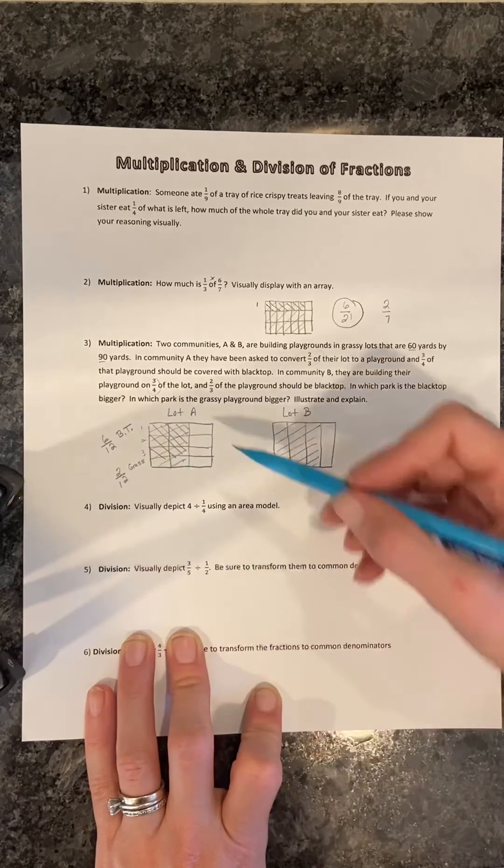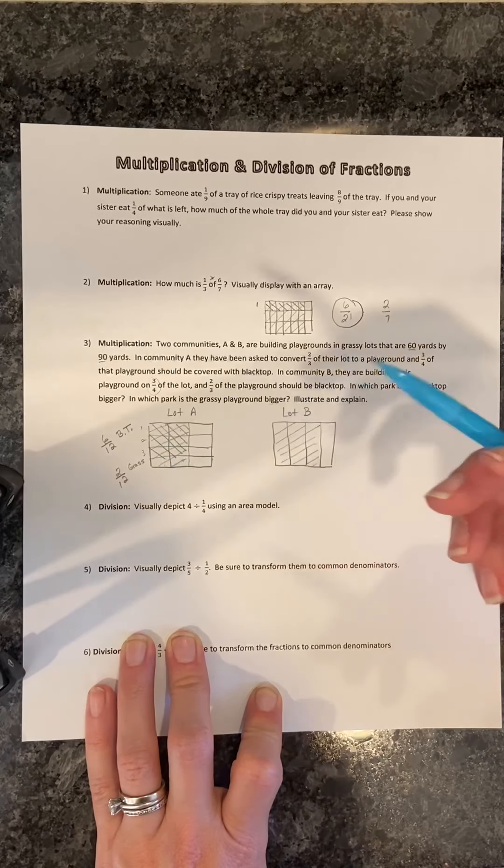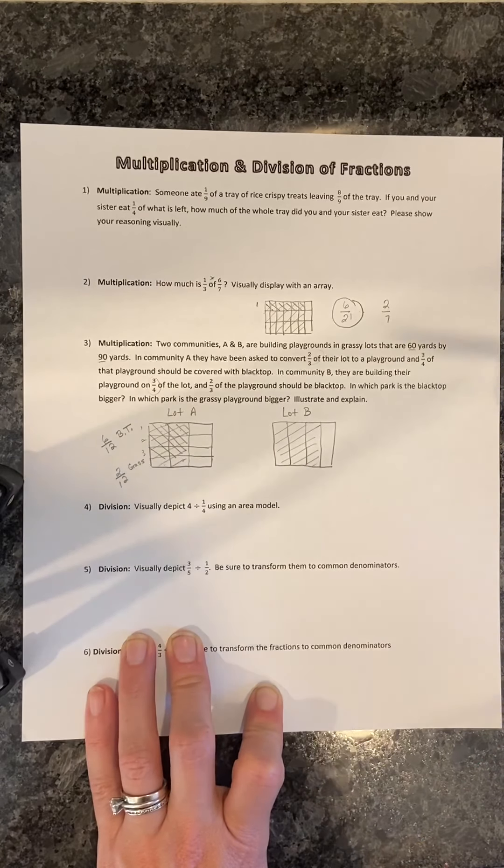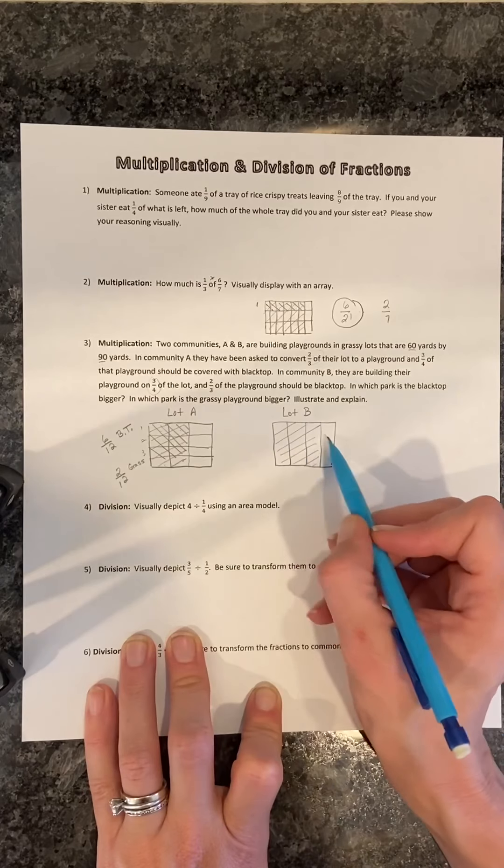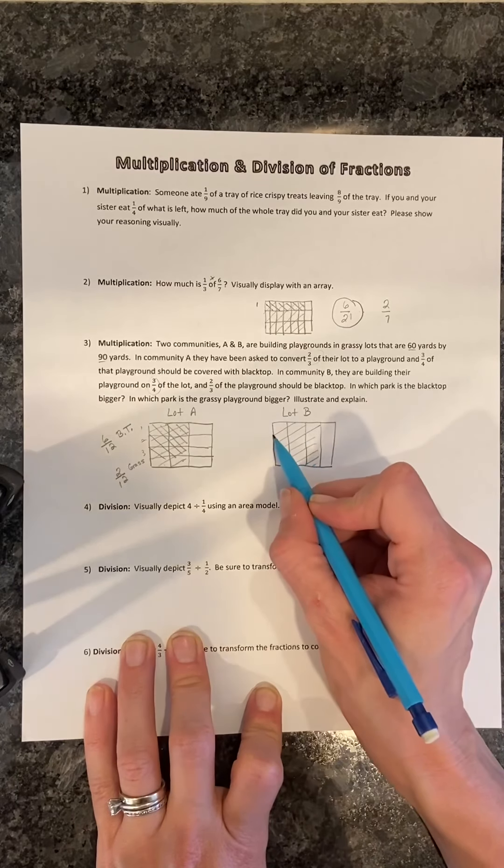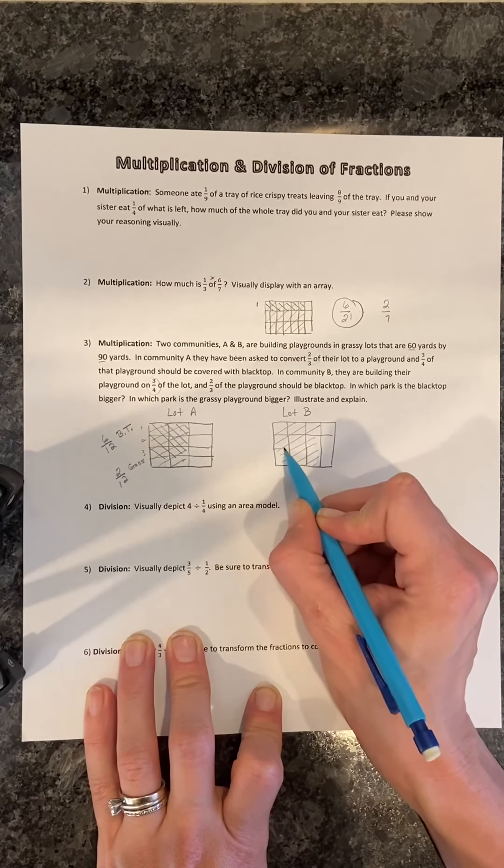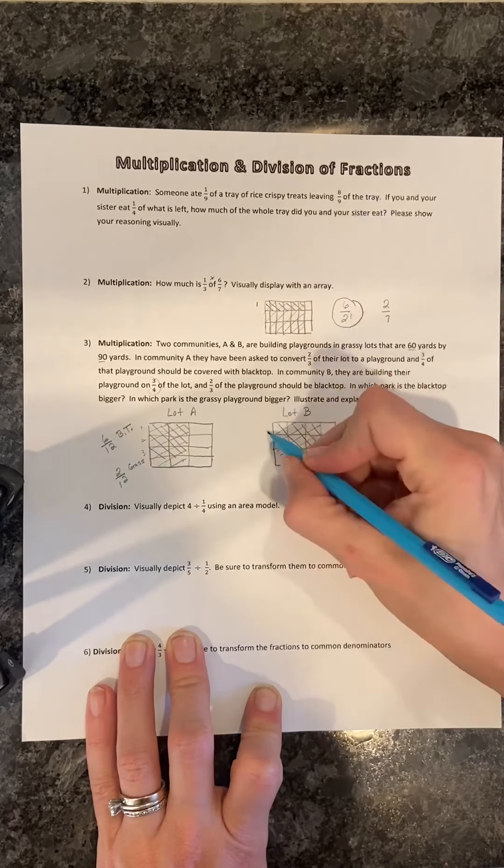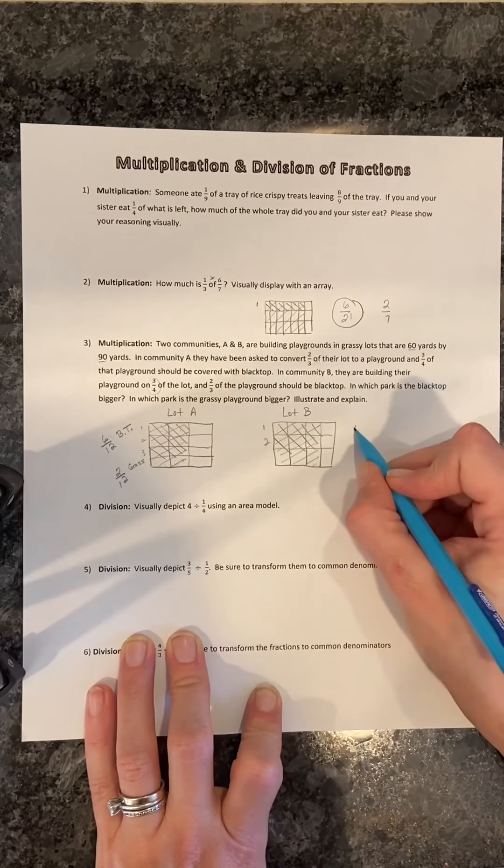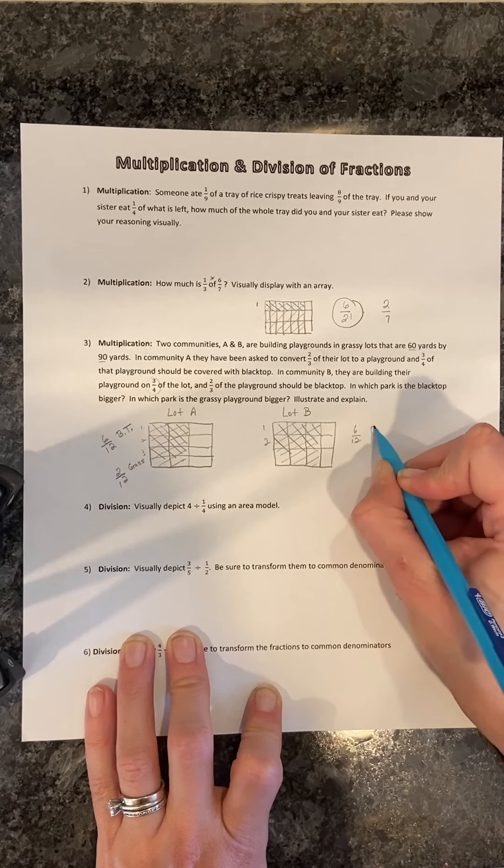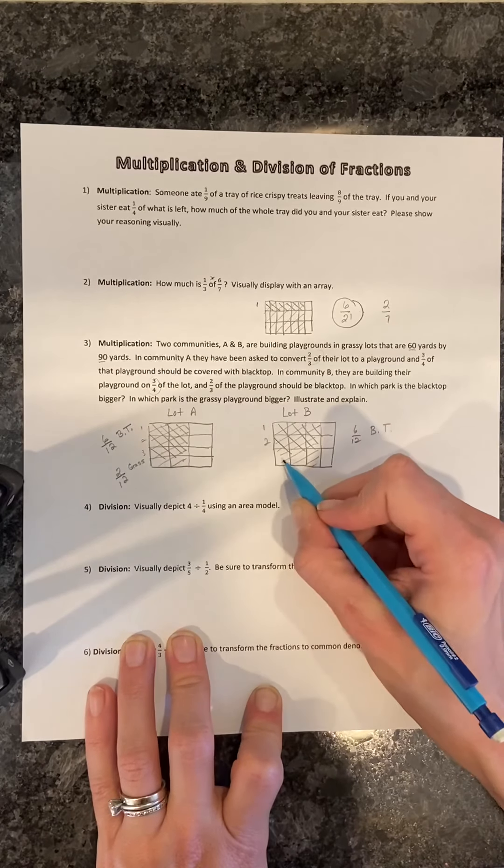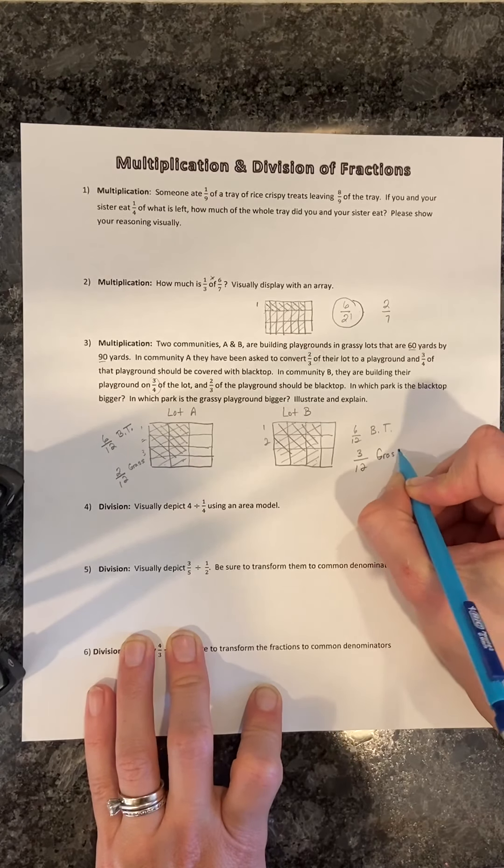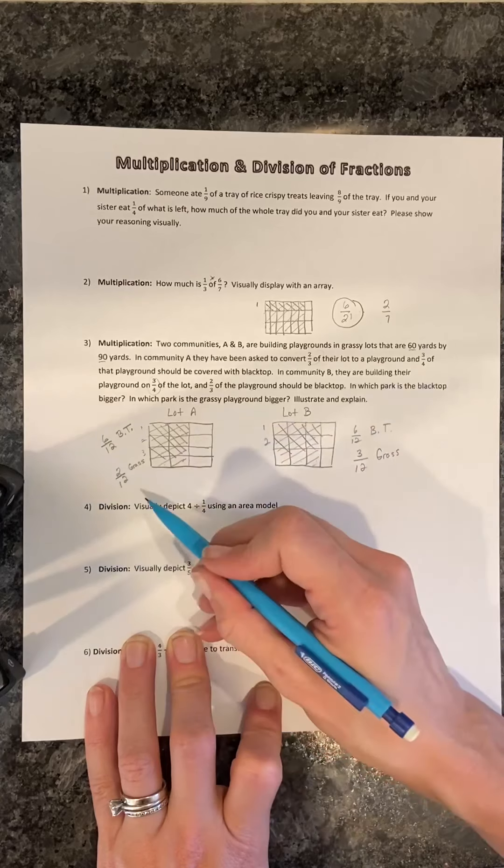Because the playground, which was initially just two-thirds, is a combination of a blacktop area and grass. We don't care about that leftover at all. We have no idea what they're doing there. In lot B, of this three-fourths, two-thirds will be blacktopped. So we split into thirds this direction. And we will shade two of those rows. So I shaded this row and that row. Again, six-twelfths will be blacktopped. And then the leftover will be grass. So three-twelfths will be grass. So lot B has more grass than lot A, but they both have the same area blacktopped.